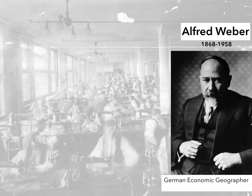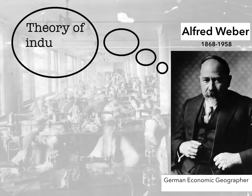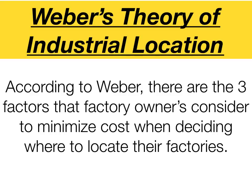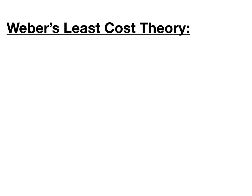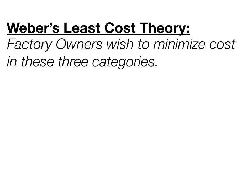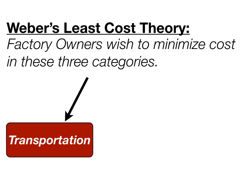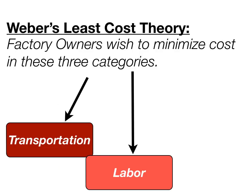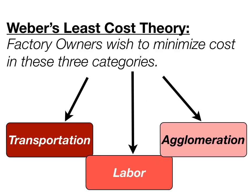We're going to start by moving back in time to a geographer from Germany named Alfred Weber, who came up with the theory of industrial location. According to Weber's theory, there are three factors that factory owners consider to minimize cost when deciding where to locate their factories. He called it the least cost theory, and the three categories are transportation, labor, and agglomeration.